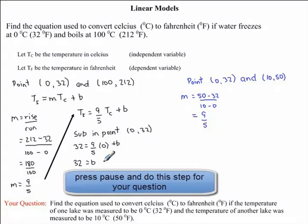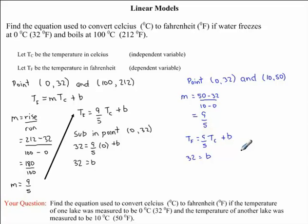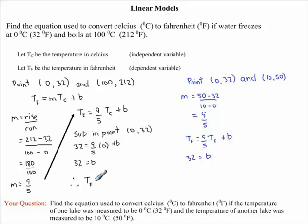I would now like you to find the intercept in the question you were given. Your T subscript F intercept should also be 32. So now we substitute our intercept into our equation to get our final answer. Therefore, the equation of our line is T subscript F is equal to 9 over 5 times T subscript C plus 32.